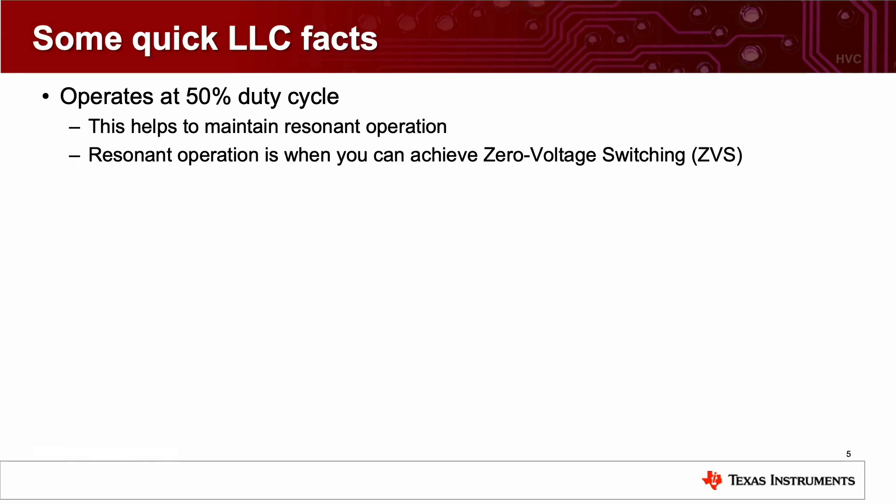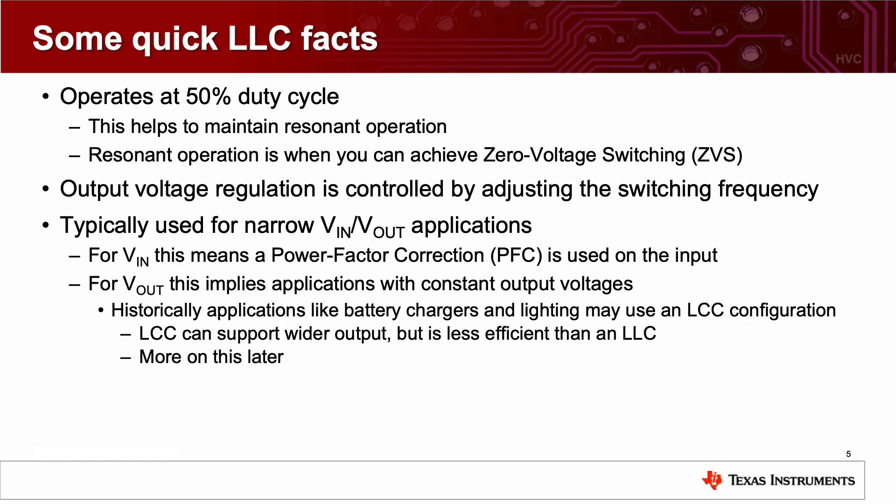So some quick LLC facts. LLC converters operate at a 50% duty cycle. This helps to maintain the resonant operation. And when you have resonant operation, this is how you can achieve zero voltage switching. An LLC controller controls the output voltage by adjusting the switching frequency. LLC converters are typically used in narrow VIN, VOUT applications.